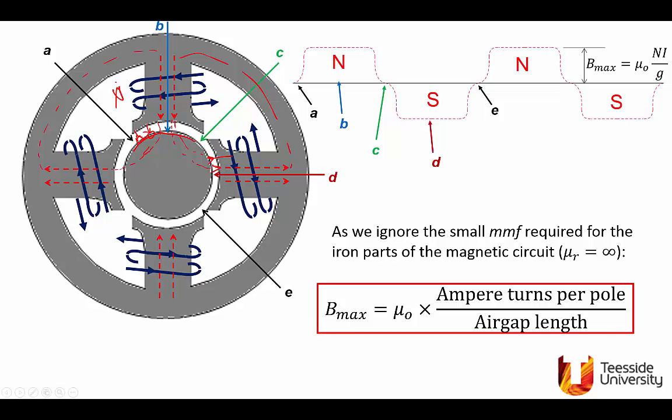we end up with the expression that maximum flux density here is mu naught ampere turns per pole. Every pole has N turns carrying current I, divided by the air gap length, and the air gap length here is G. So this is a very simple expression, doesn't matter how complex the shape is, this is a four pole, the previous slide was two pole, you can extend the geometry to any number of pole pairs, and you can use the simple expression to calculate the flux density, the maximum flux density in the air gap.